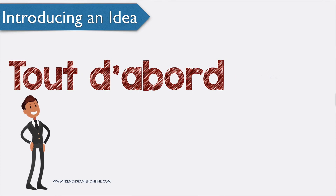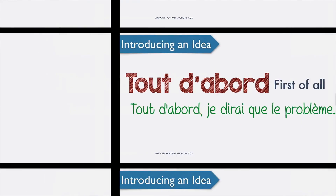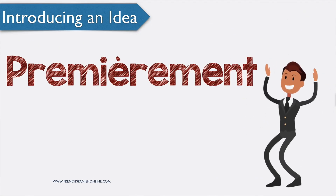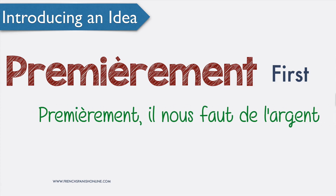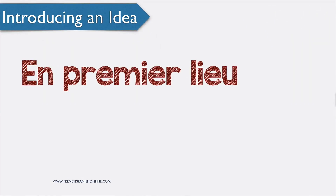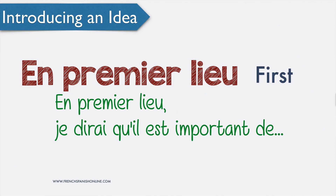Another one is 'tout d'abord', meaning 'first of all': 'tout d'abord je dirais que le problème…'. Then 'premièrement', meaning 'firstly'. When you start with premièrement, we expect a second and maybe third point: 'premièrement il nous faut de l'argent' — we need money first. Another option is 'en premier lieu', meaning 'first': 'en premier lieu je dirais qu'il est important de…'